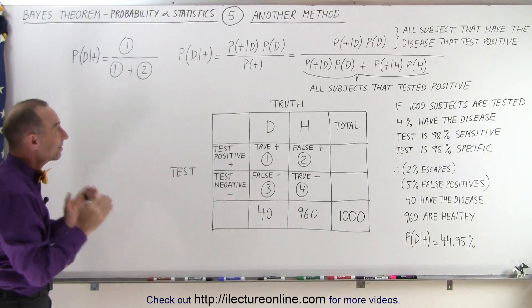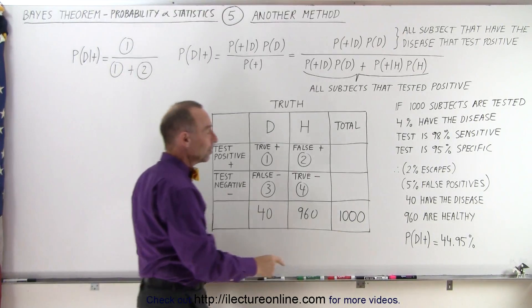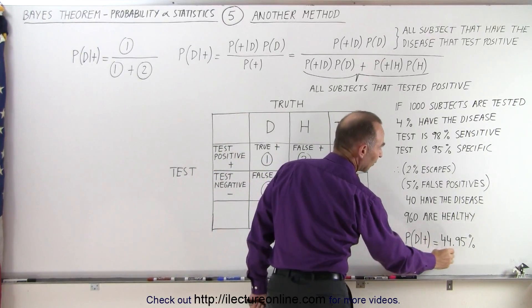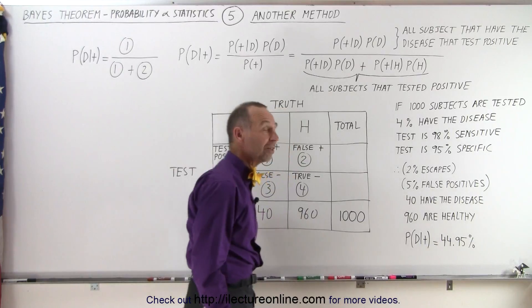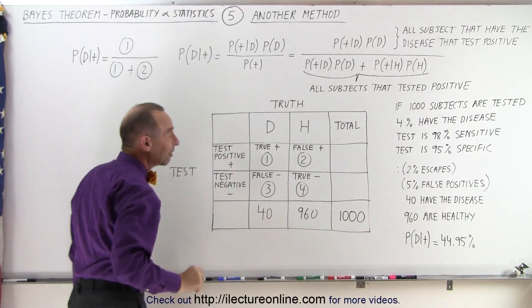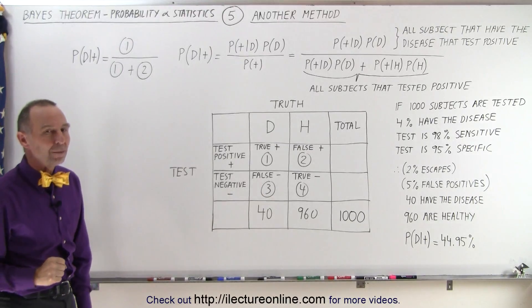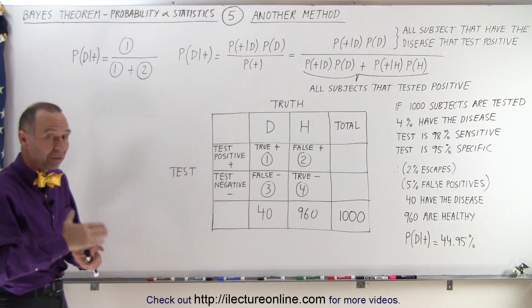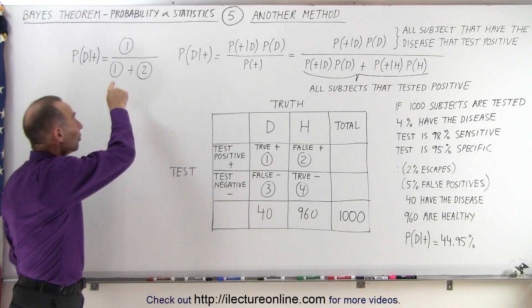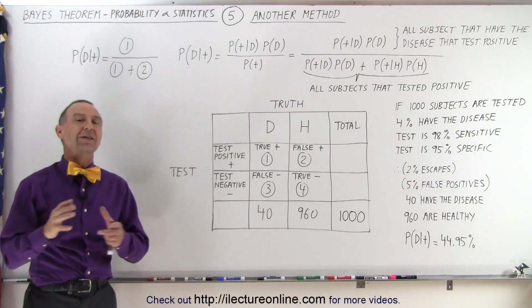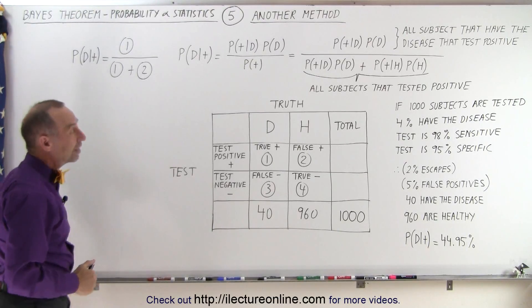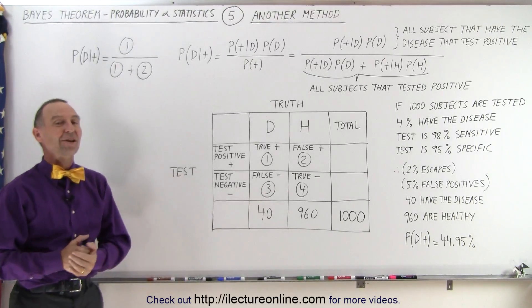Notice that we can get the exact same result we got in the last video. The probability that a subject has the disease when they test positive was 44.95%, and if we do the problem this way, we should get 44.95% as well. In the next video, we're going to show you how to calculate the contents of those boxes, and then use that to figure out the probability that a subject has the disease if they test positive.